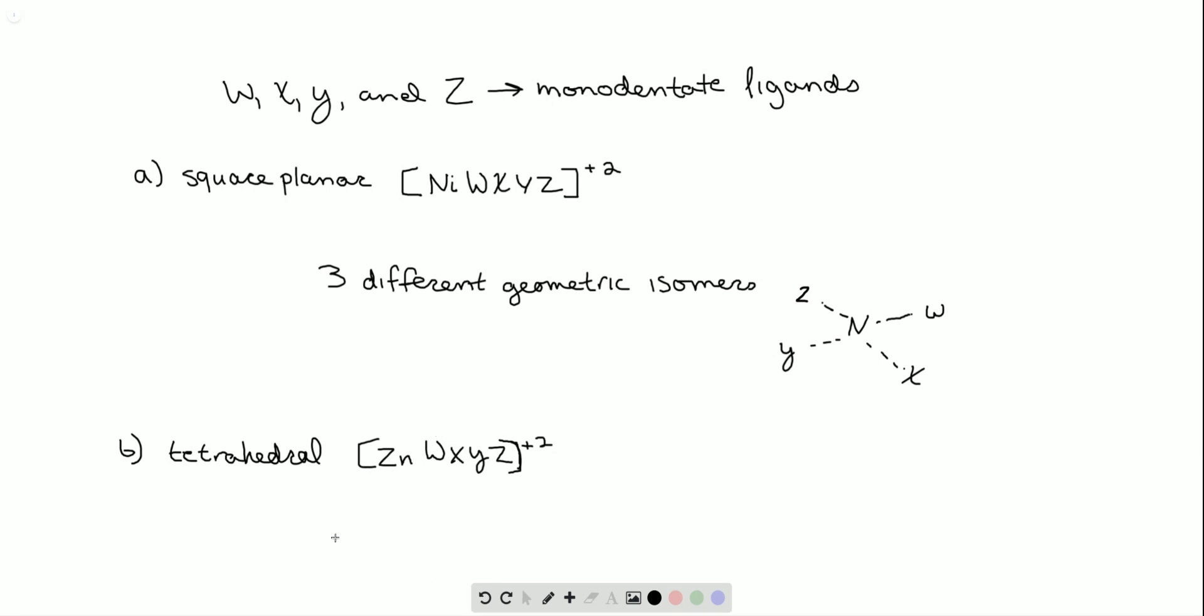On the other hand, in the tetrahedral case, it only exists in a single form. Because it's three-dimensional and can rotate in 3D space, whereas square planar molecules are two-dimensional and they do not have that luxury.